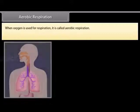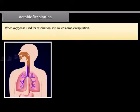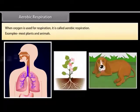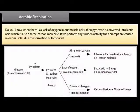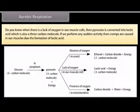Aerobic respiration: when oxygen is used for respiration, it is called aerobic respiration. Examples include most plants and animals. When there is a lack of oxygen in our muscle cells, pyruvate is converted into lactic acid, which is also a 3-carbon molecule. If we perform any sudden activity, cramps are caused in our muscles due to the formation of lactic acid.